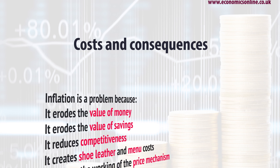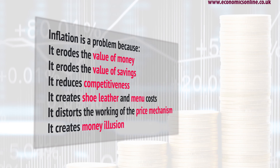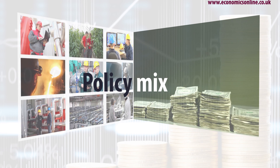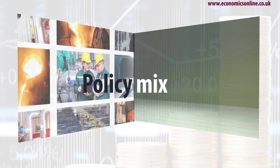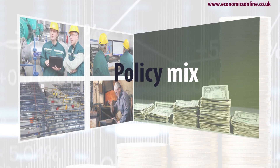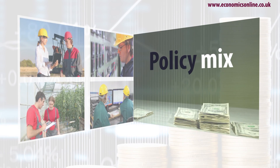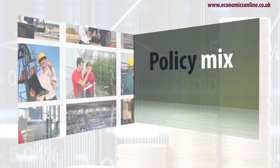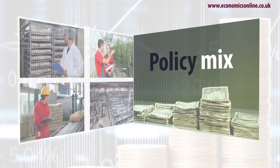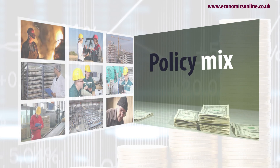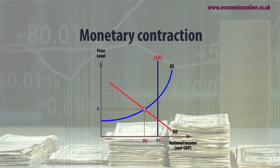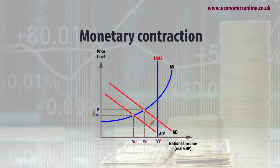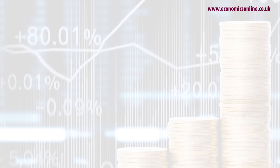In terms of choosing policies to implement, the most suitable policy or mix of policies must be selected and explained. For example, inflationary pressure could be dealt with in several ways, such as through a monetary contraction by the central bank, raising interest rates, or by long-term supply-side improvements.